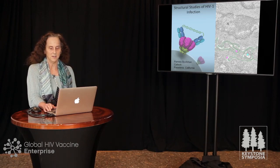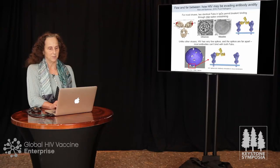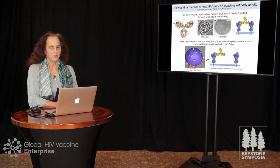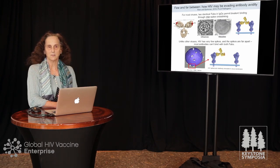I'm going to start with the first topic, which is based on thinking we were doing about six years ago, published in an opinion piece in 2010 titled 'Few and Far Between: How HIV May Be Evading Antibody Avidity.' Josh Klein and I had noticed that HIV looked fundamentally different than other viruses to which we mount fairly effective immune responses or even have vaccines.